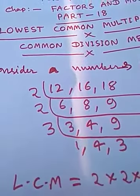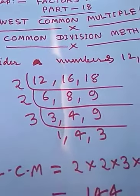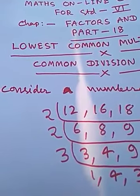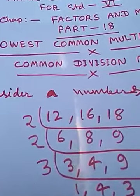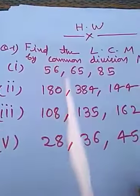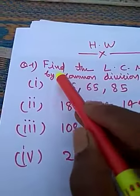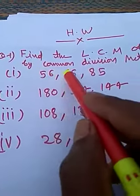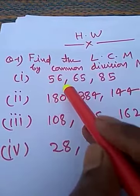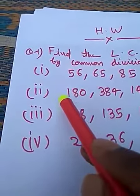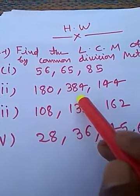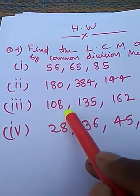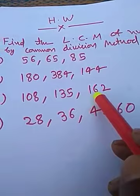I hope all of you are able to understand how to find the LCM by common division method. On the basis of it, there are some homework questions. Question 1: Find the LCM by common division method for: (a) 56, 65, 85; (b) 180, 384, 144; (c) 108, 135, 162.